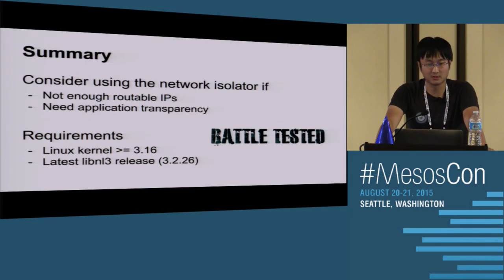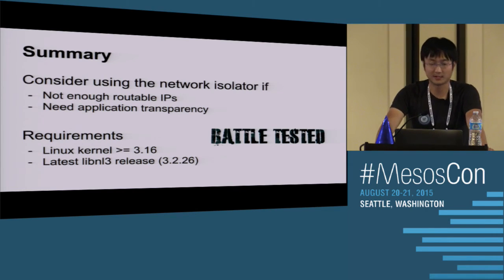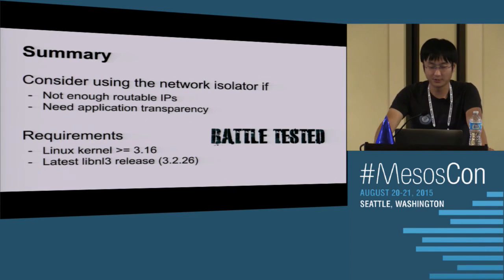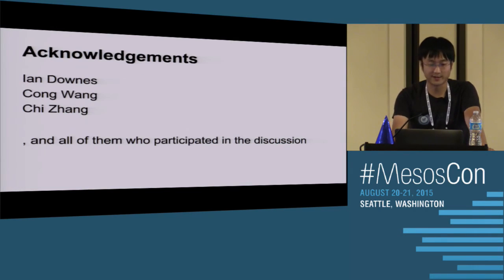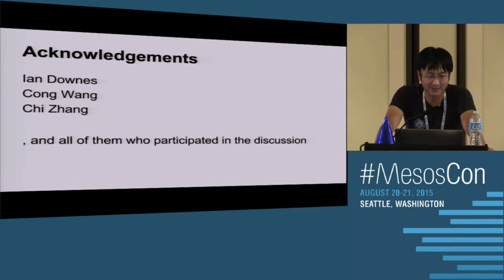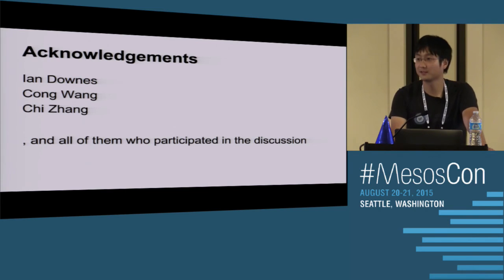Summary: consider using this isolator if you don't have enough routable IPs and need application transparency like service discovery. To run it, you need a recent kernel and the latest libnl 3. Thanks to all the Twitter folks who worked on this project and participated in discussions.